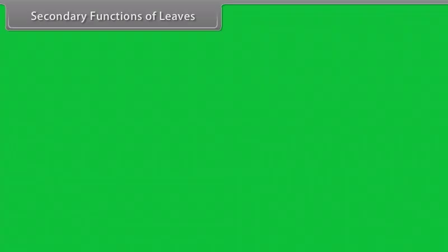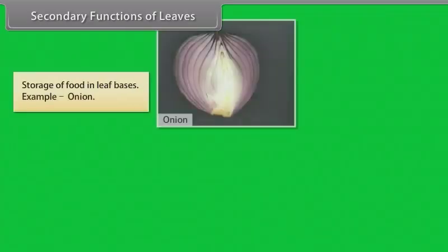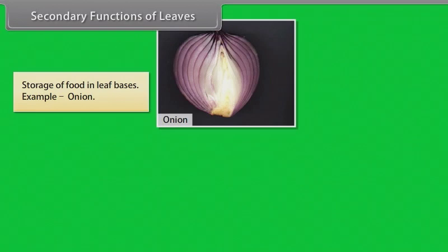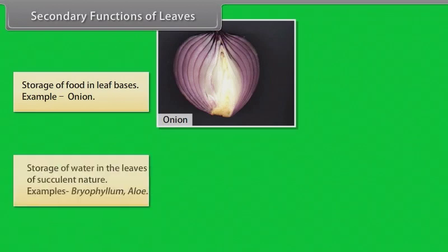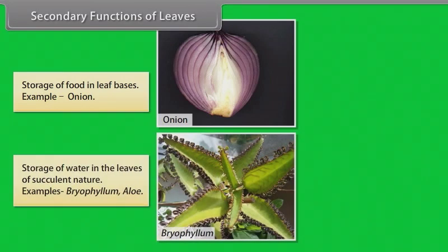Gaseous exchange: It takes place in leaves through stomata during the process of photosynthesis and respiration. Secondary functions of leaves: Storage of food in leaf bases. Example: Onion. The storage of water in the leaves of succulent nature. Examples: Bryophyllum, Aloe.